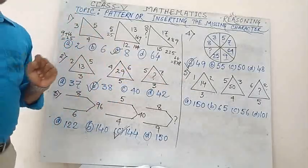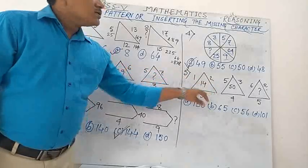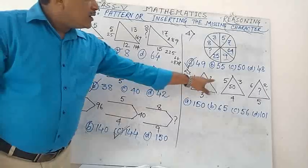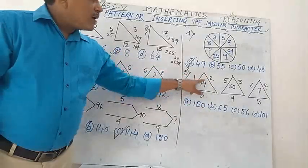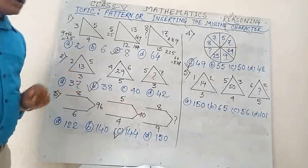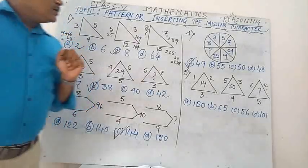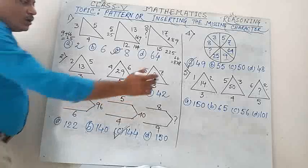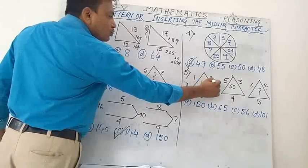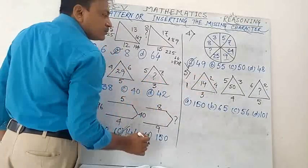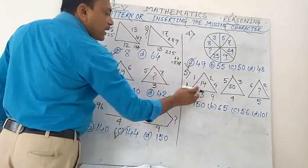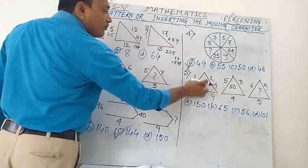1×1 = 1, 2×2 = 4, 3×3 = 9. So 9 + 1 = 10, plus 4 = 14. Now check the second triangle: 5×5 = 25, 4×4 = 16, 3×3 = 9. 16 + 9 = 25, and 25 + 25 = 50. The rule is: sum of squares of all three sides.